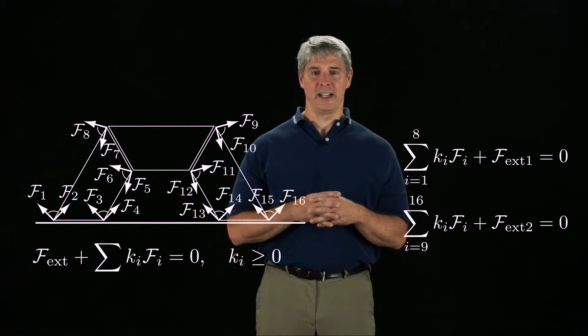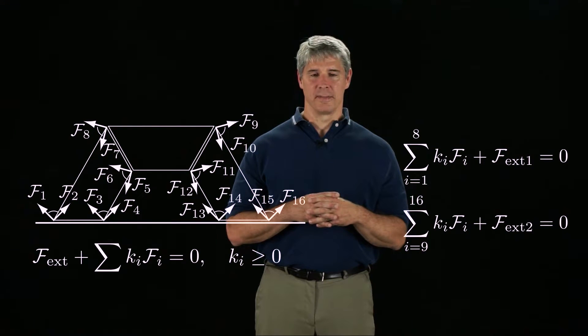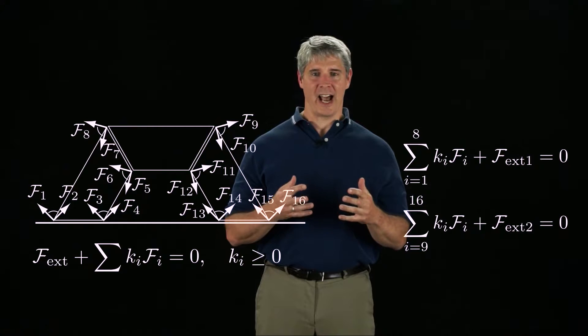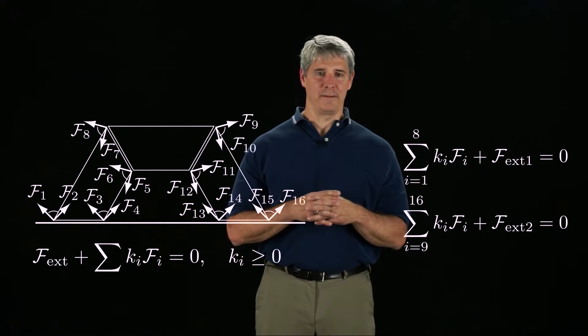For the right block, we can write another vector static balance equation. The eight friction cone edges acting on the right block are labeled f9 through f16.